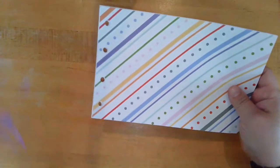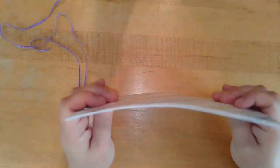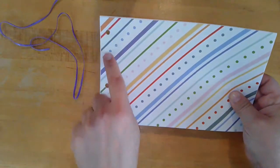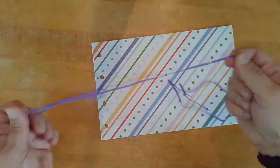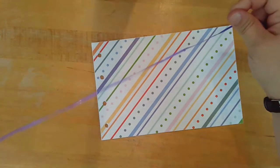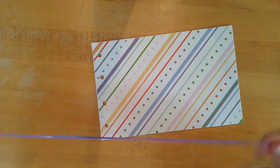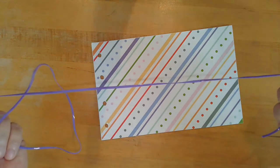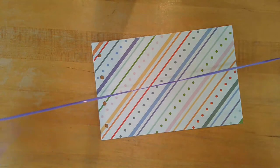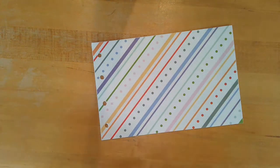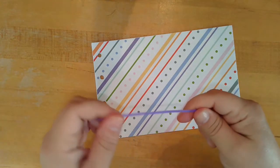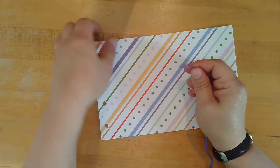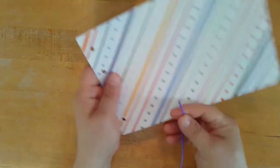To start with you want to make sure that your paper is all lined up together, nice and neat, and that the holes are nice and clear. Then you're going to take your jelly string. Make sure there's no knots in it and straighten it out. It'll be a little kinked up from being in the bag.